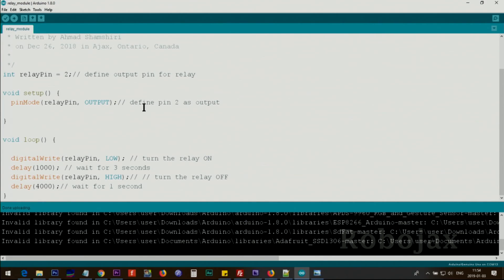Let me explain the code. This is the exact code that I've shown you in the previous lecture. Relay pin is a variable of type integer, we have assigned pin 2, so we will be connecting our relay to pin 2. Inside the setup we have to define the pin 2 relay pin as an output.